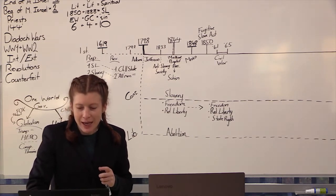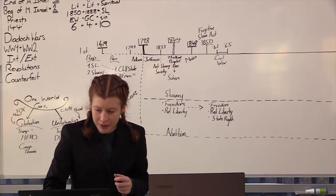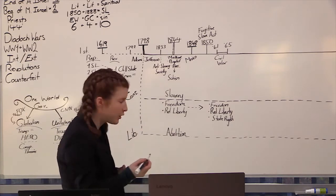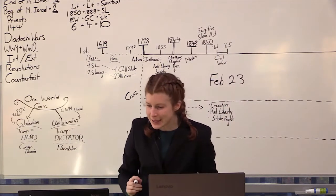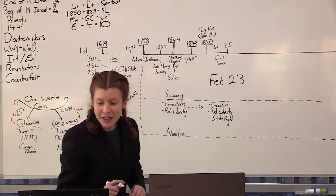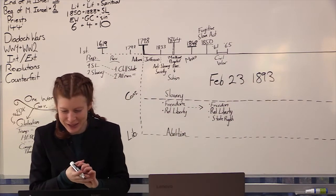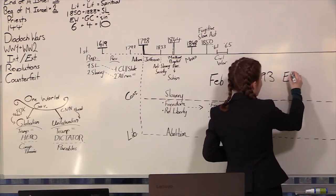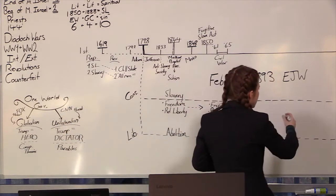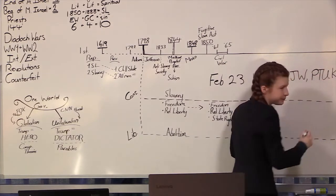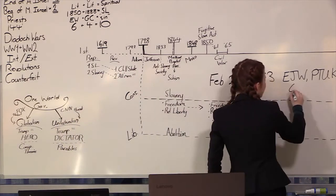The judge says that to allow the Jews an exemption would interrupt the rights of others. E.J. Wagner gives some insight into this mentality. This is February 23, 1893. So 1893 takes you to what year? 1893 takes you to 2019. PT UK, Present Truth United Kingdom, 64.9. This is Wagner.